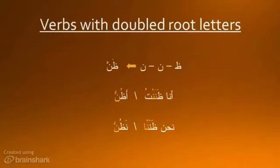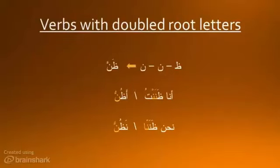What happens when a root has two of the same letter together? This doesn't happen with the first two letters, but it can with the second two. In the past tense, these two noons will usually be separated by a short vowel.